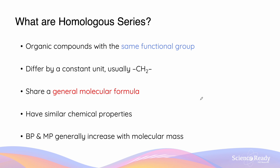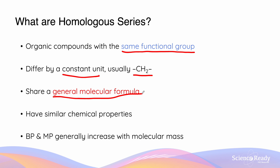So what are homologous series? Homologous series are a group of organic compounds which have the same functional group. These compounds differ by a constant unit, which is usually CH2. Another important characteristic of a homologous series is that they share a general molecular formula, and since they have the same shared functional group, they also have similar chemical properties.